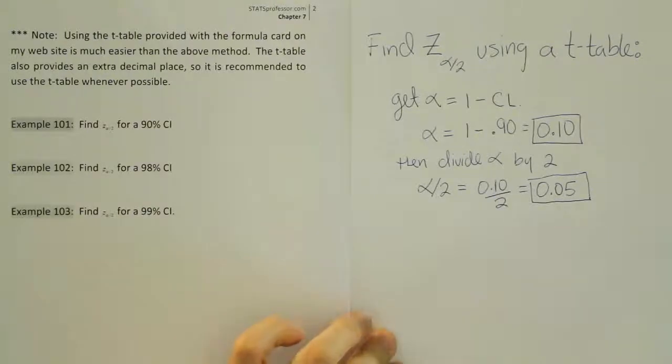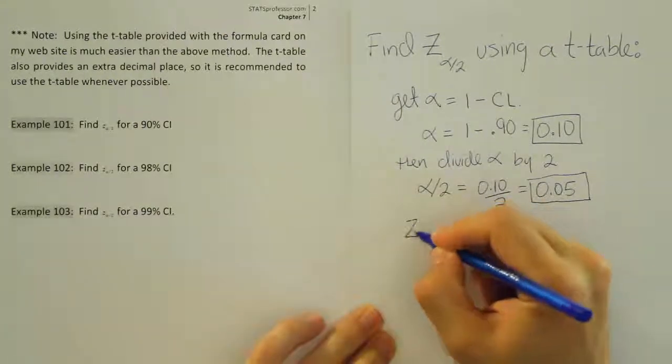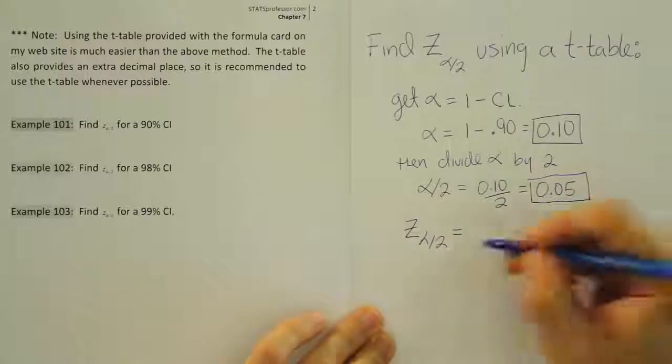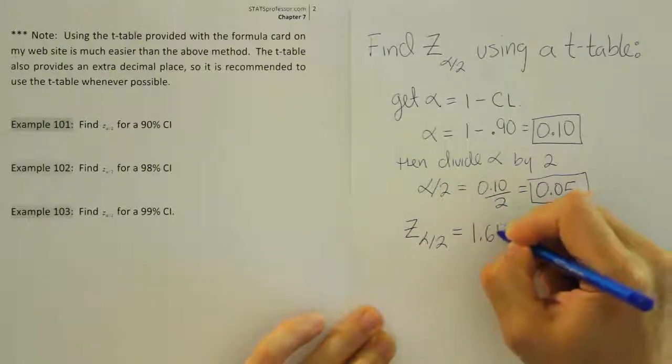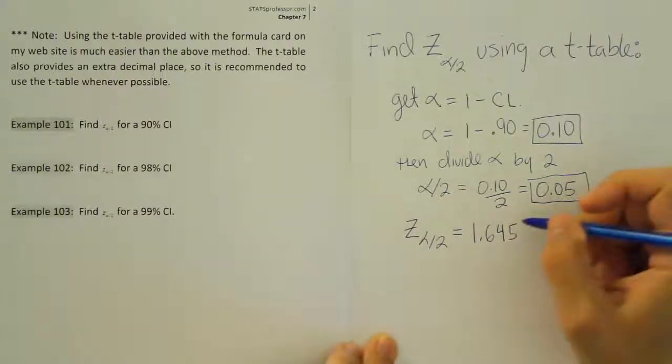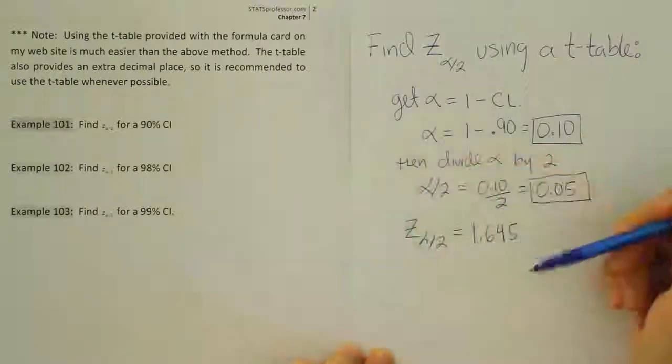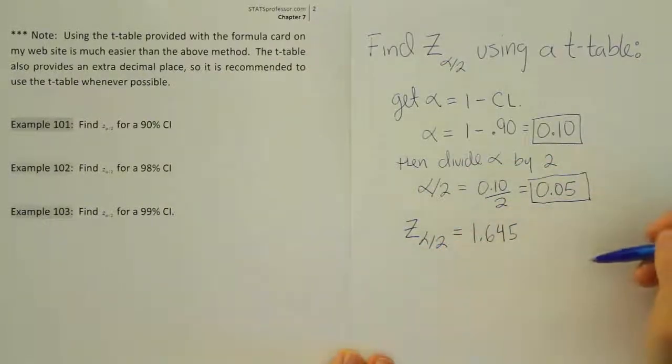1.645 is our critical z value. Okay, so for our first example, the answer is z alpha divided by 2 is equal to 1.645. And we can do the same for the other two. We can actually work a little bit faster on those examples.